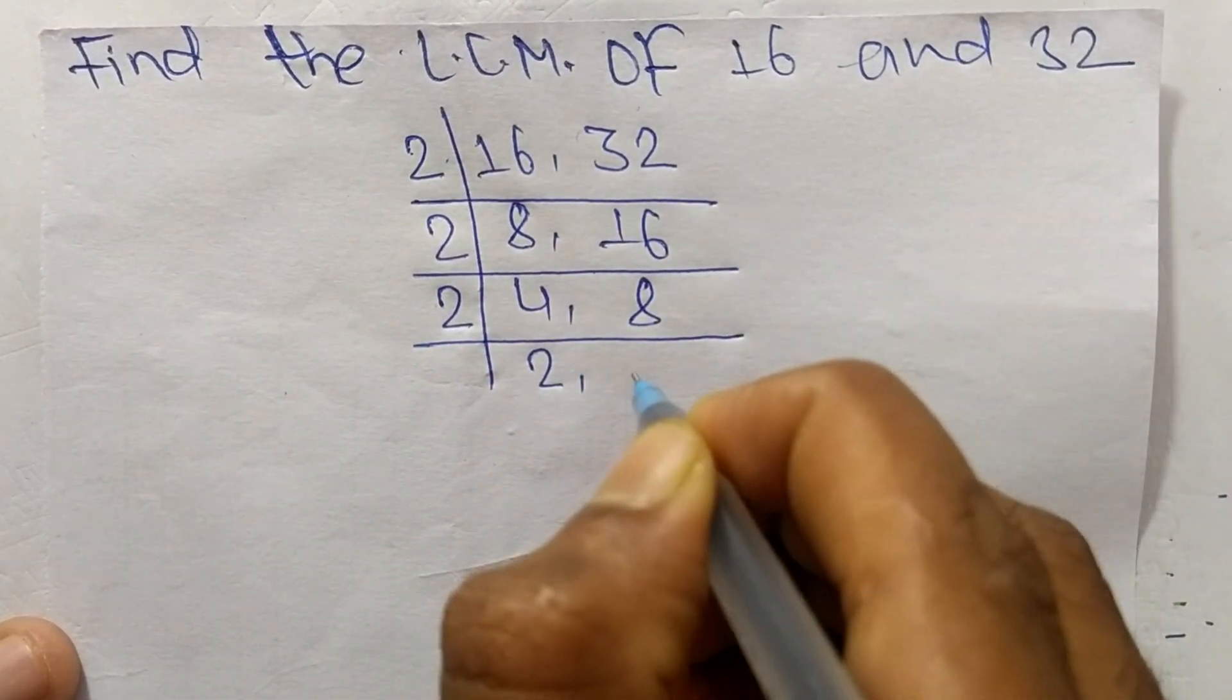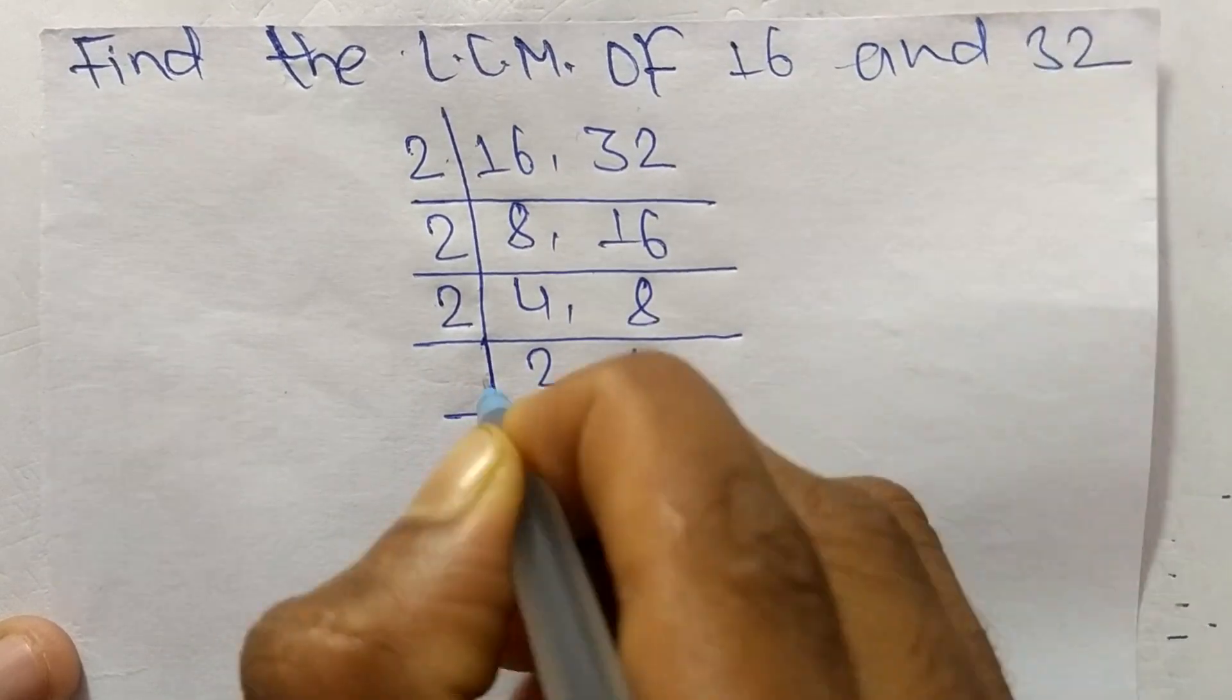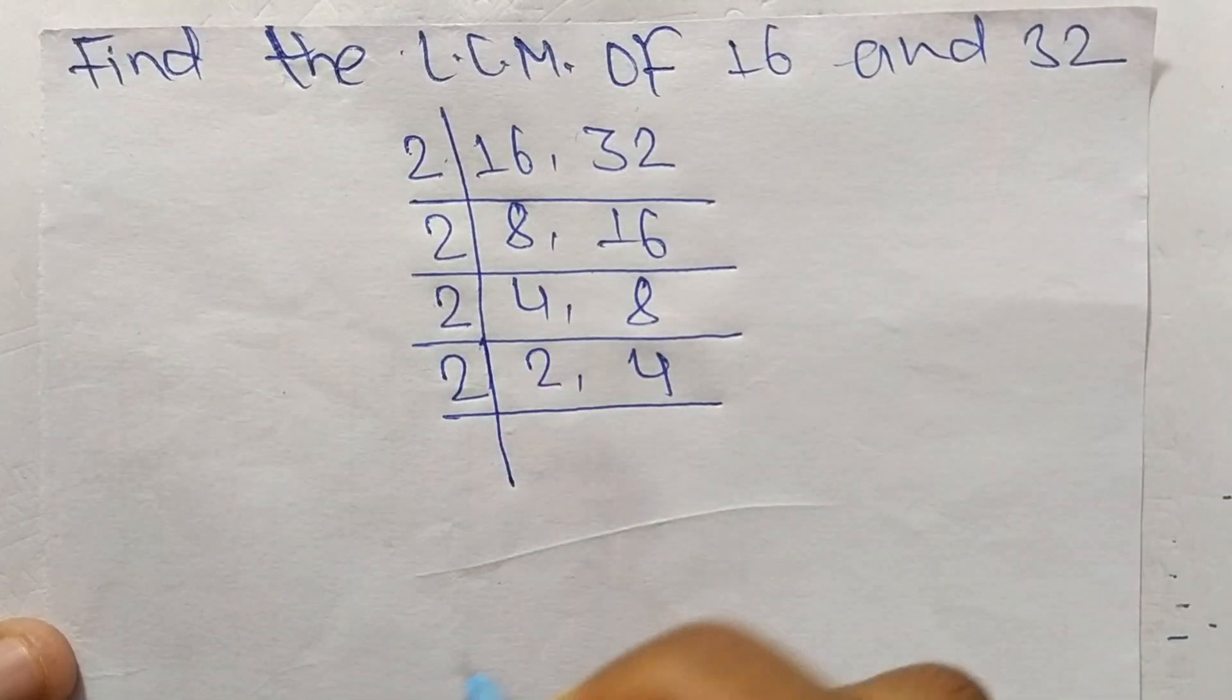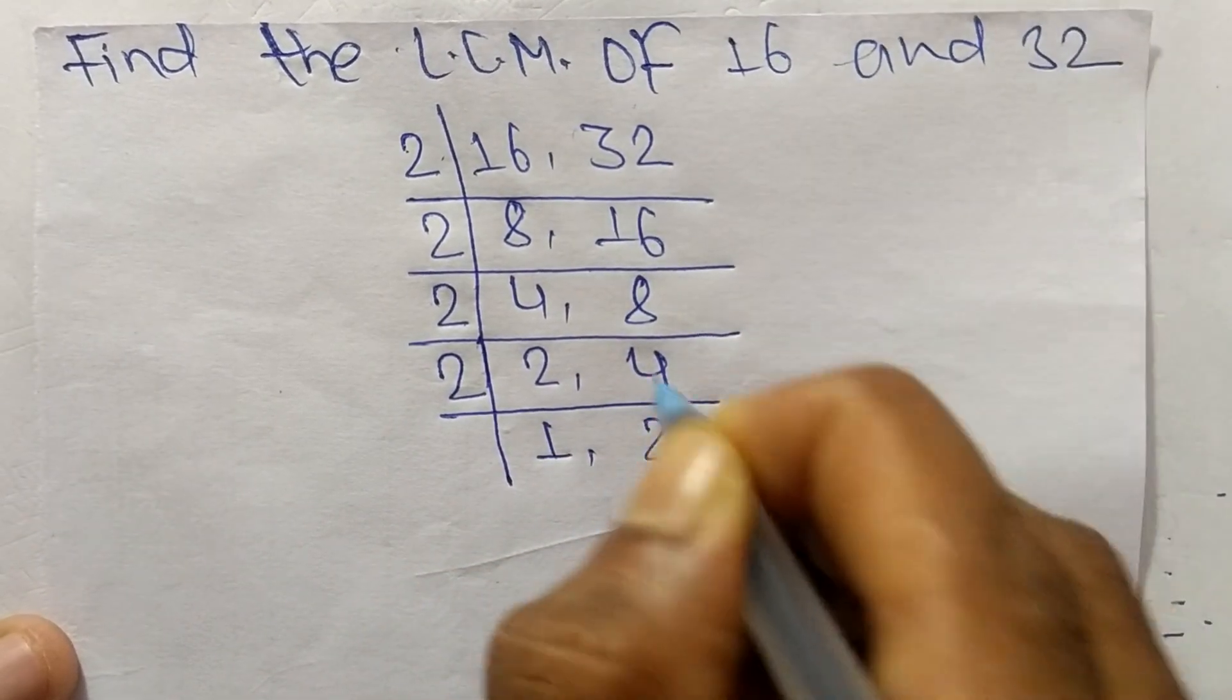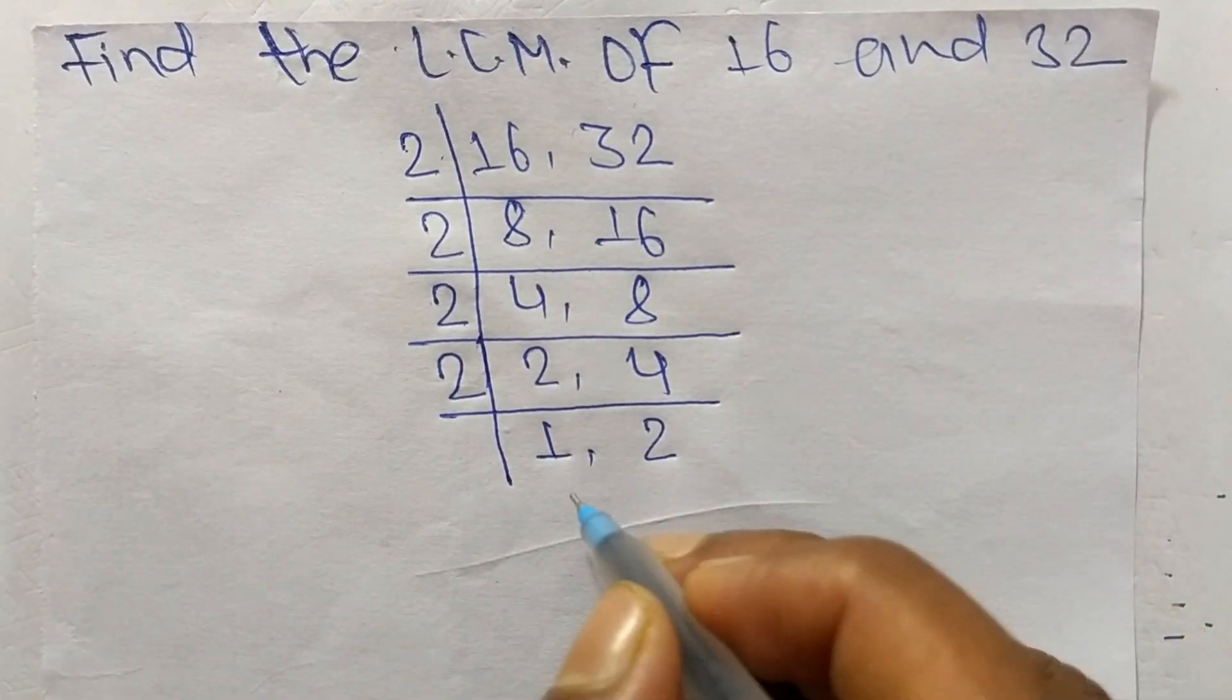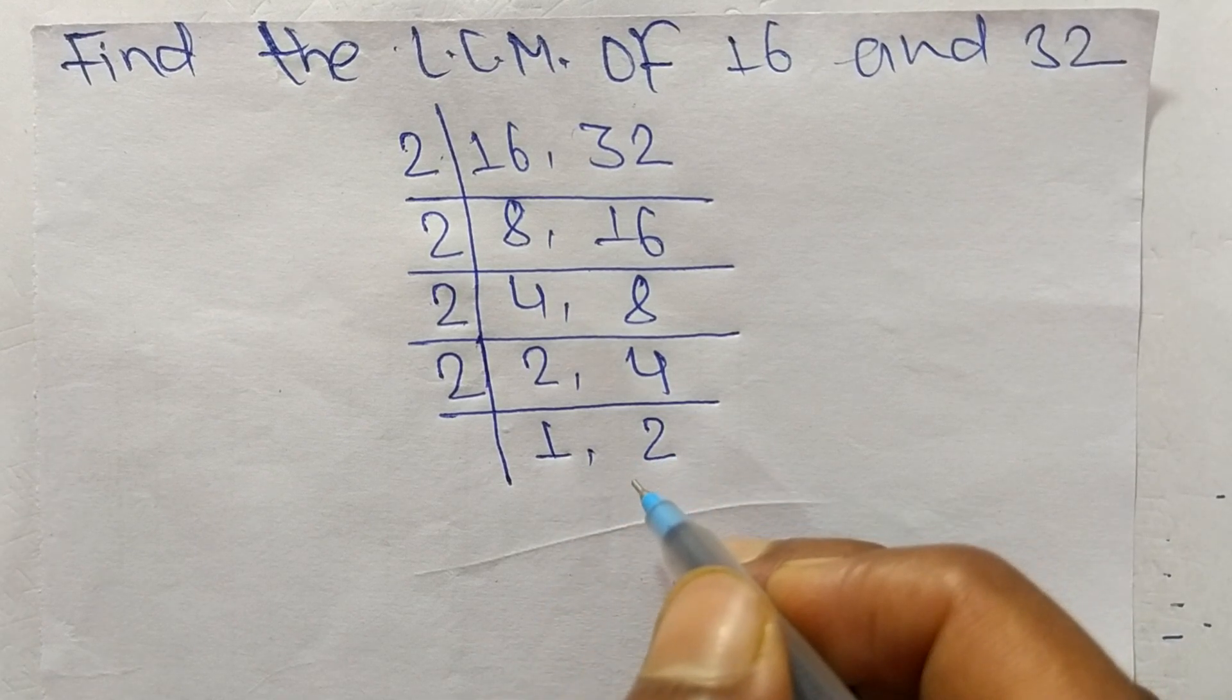2 times 2 means 4 and 2 times 4 means 8. Again it is divisible by 2, so 2 times 1 means 2, 2 times 2 means 4. At last we have 1 and 2 which are not exactly divisible by the same number.